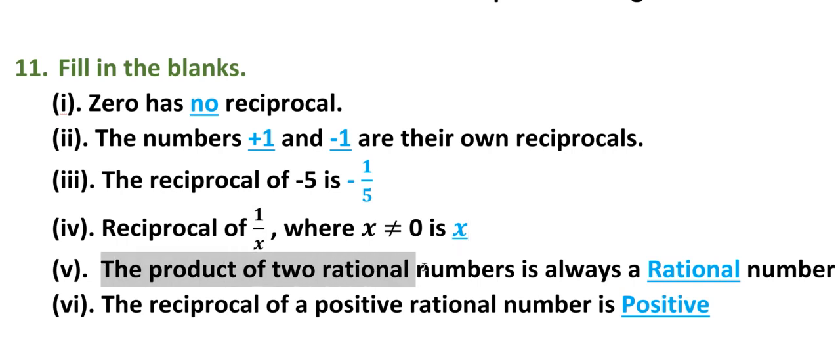Fifth one: the product of two rational numbers is always a rational number.